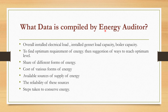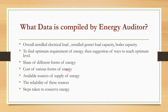What data is compiled by an energy auditor? He will compile: overall installed electric load, installed genset load capacity, and boiler capacity. To find the optimum requirement of energy and suggestions to reach the optimum level — how much you need it and how intelligently you can reach that source of energy. The share of different forms of energy in your organization — what all sources of energy you are using with percentage-wise share — the cost of various forms of energy, and the available sources of supply of energy. If not this source, then what is a substitute? You may hire some other source and that data will also be given to you.